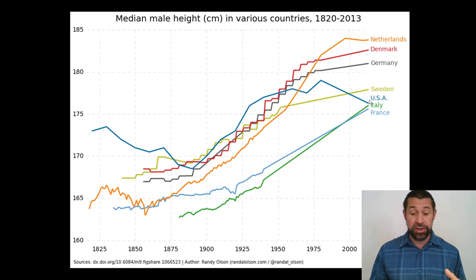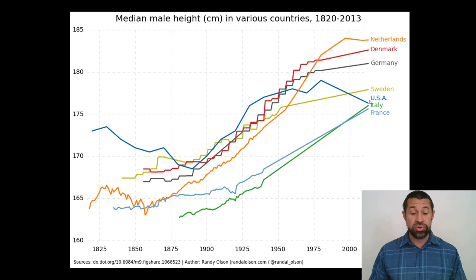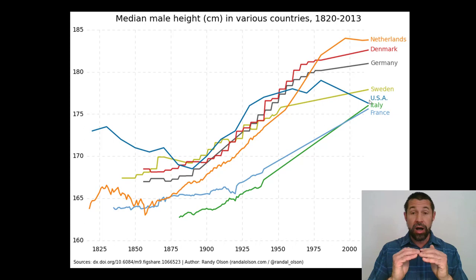The second driver that researchers point to is immigration rates from Central America — like Guatemala — where the citizens of those countries tend to be shorter, pulling the mean down as well.